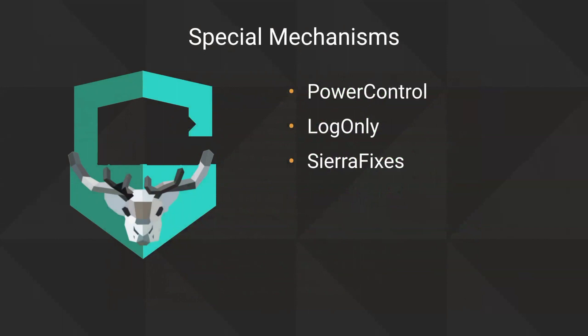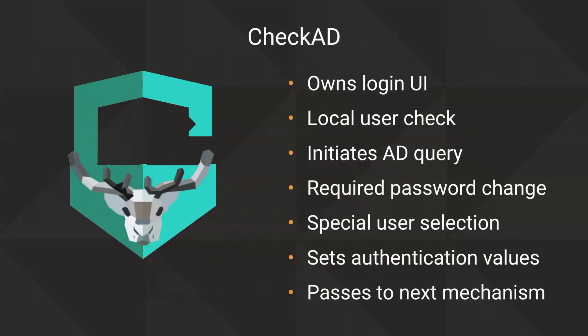Power Control is a mechanism whose only purpose is to make the shutdown and restart buttons on the login window work. Log Only is for diagnostics — it allows you to output extra logging information. Sierra Fixes works around some issues you might run into when using this on macOS 10.12. High Sierra is the preferred deployment target, but we do have accommodations for regular Sierra as well.